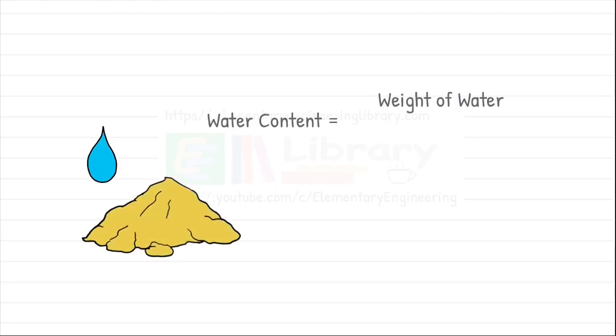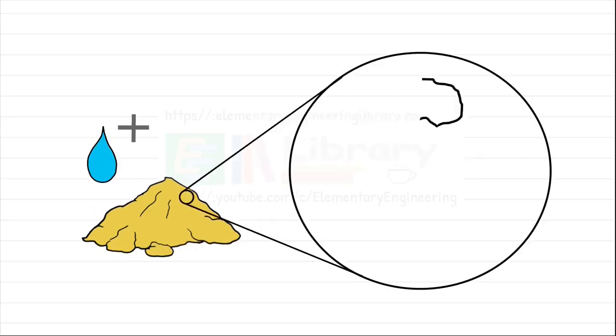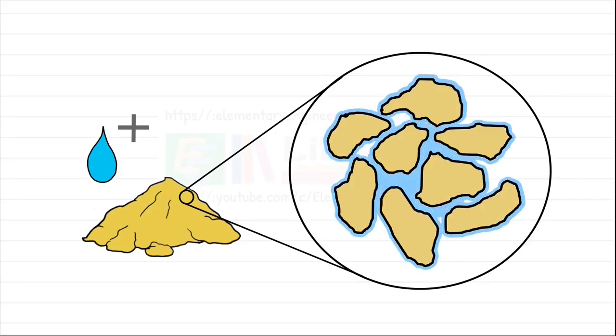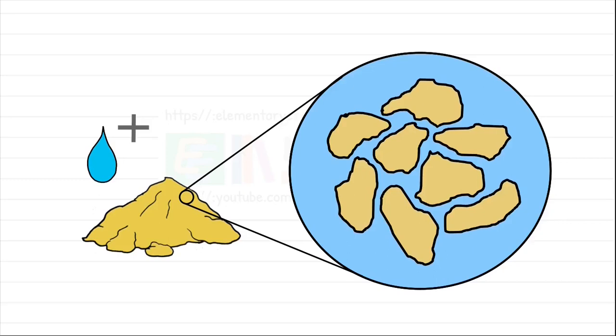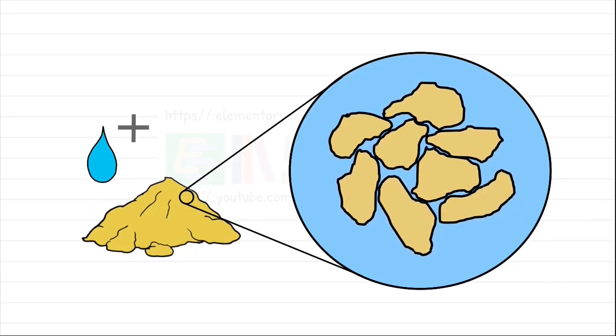We calculate water content in any soil as weight of water present in the soil divided by weight of soil solids only. When the moisture content is increased further by adding more water beyond 8 to 10 percent, the bulking of sand effect almost disappears. It happens because excess water destroys the capillary meniscus and the particles can now come closer. Hence soil's volume begins decreasing.